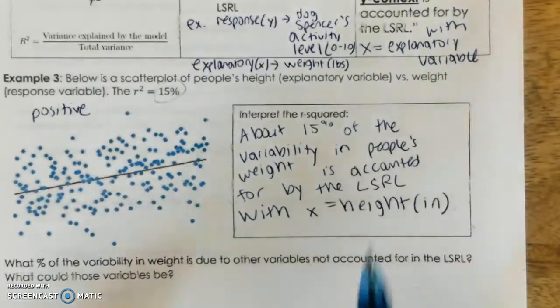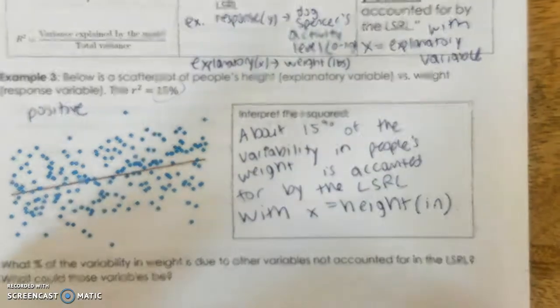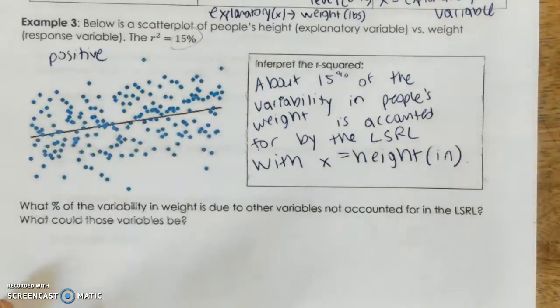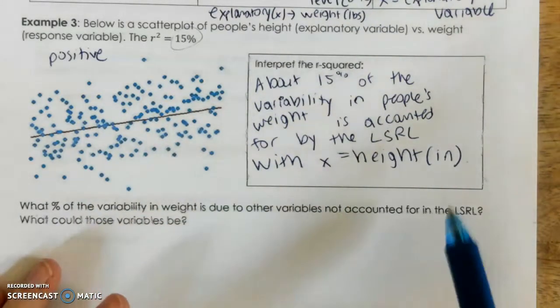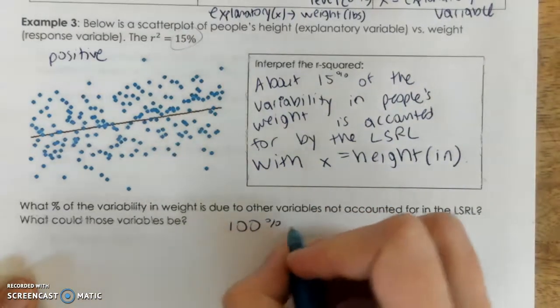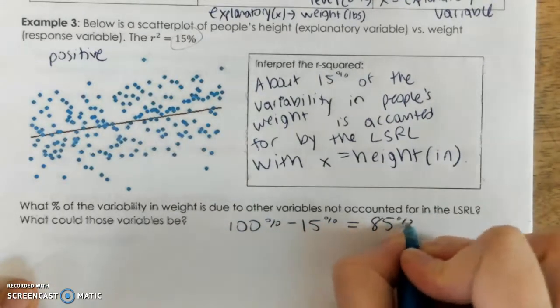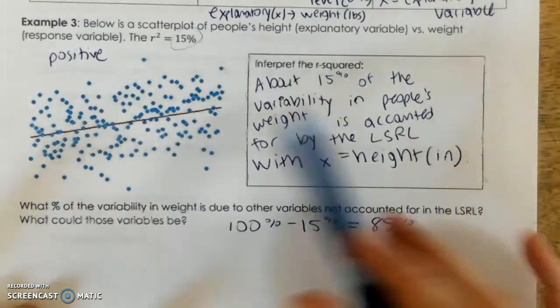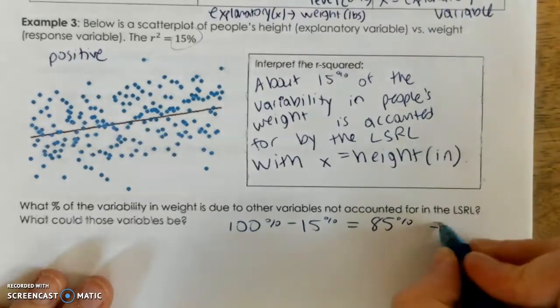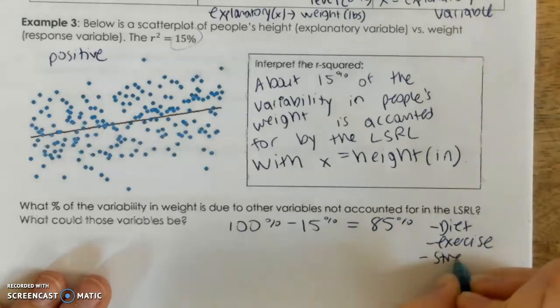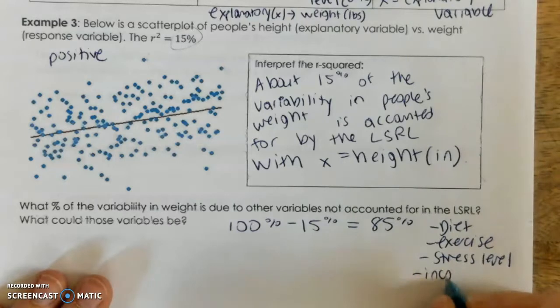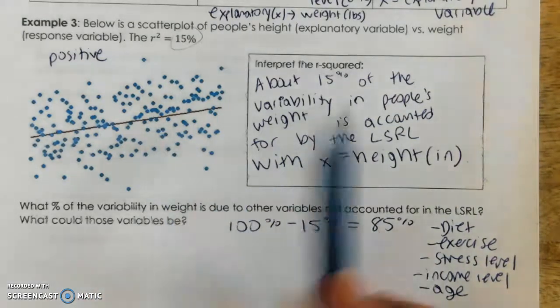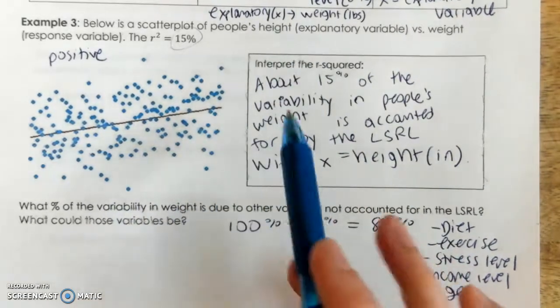All right, our R-squared is 15%, so let's interpret that R-squared, and we can use the sentence stem from above. We would say about 15% of the variability in people's weight is accounted for by the least-squared regression line with X equals height. All right, about only 15% of the variability, right? Percents go up to 100%, so there's some other variables that are affecting people's weight, right? So, if 15% is accounted for by height with our prediction model, what percent is due to other variables that are not accounted for in my model? Let's see. All we'd have to do is 100% minus 15% would give me 85%. So, 85% of the variability between people's weight is not accounted for by their height. So, what are some other variables? Diet, exercise, stress level, income level. All these things could affect people's weight, right? Age. So, their height is not the only thing. Only 15% of the movement in weight is accounted for by height.